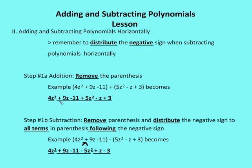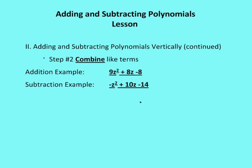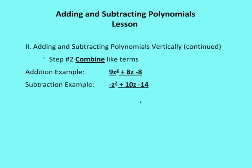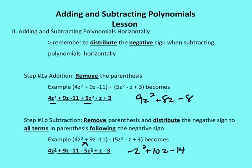In the first example, 4z squared plus 5z squared gives 9z squared, plus 9z minus z gives plus 8z, and minus 11 plus 3 gives minus 8. So we check: 9z squared plus 8z minus 8. In the subtraction example, 4z squared minus 5z squared gives minus z squared, plus 9z plus z gives plus 10z, and minus 11 minus 3 gives minus 14. We check: minus z squared plus 10z minus 14. That's what we got.